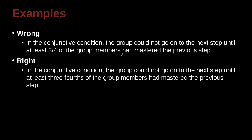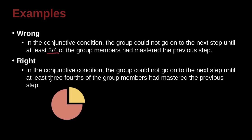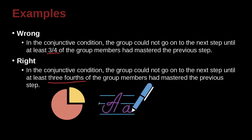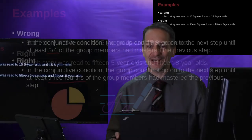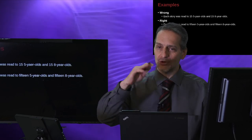In the conjunctive condition, the group could not go on to the next step until at least three-fourths of the group members had mastered the previous step. Here is our fraction 'three-fourths.' Remember, in this case you need to spell it out because it's a common fraction or ratio — except in the case of ratios expressed numerically, where you go ahead and write the ratio.